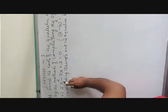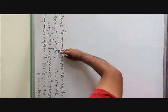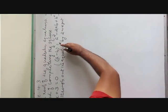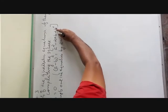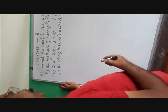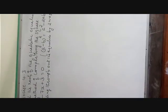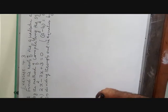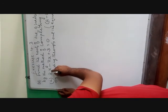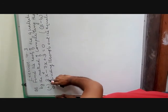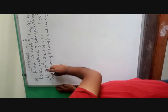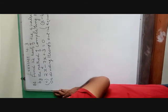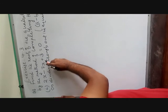For completing the square, we have to convert the given equation into the form of (a minus b) whole squared, which equals a squared minus 2ab plus b squared. For converting into this form, we need the first term to be a perfect square. Here, 2x squared is not a perfect square, so we have to divide throughout this equation by 2.